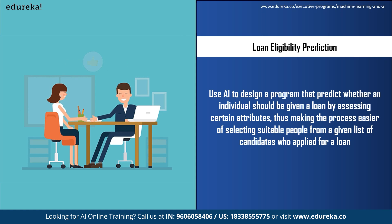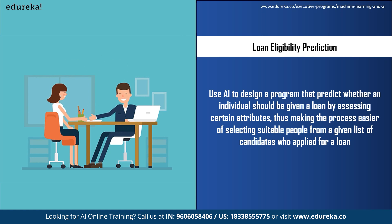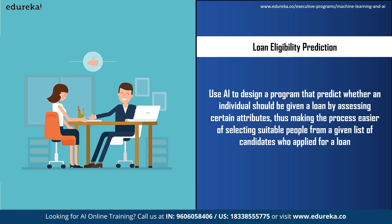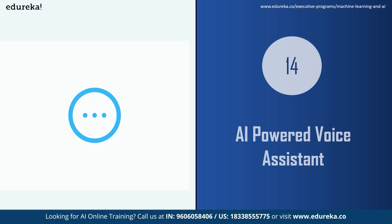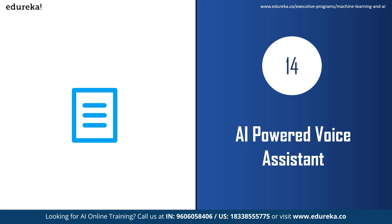The next AI project idea is loan eligibility prediction. A major problem banking employees face is the increasing rate of loan defaults, making it difficult to correctly assess loan requests. You can create an AI program that checks a person's loan eligibility by accessing attributes such as salary and previous loan details, then makes a decision to approve or deny the loan. This will make the process easier by selecting suitable candidates from a list of applicants.